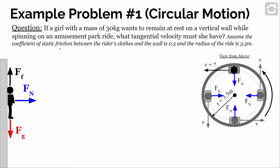The first example problem will figure out how big the needed tangential velocity is so the rider can stick to the wall when the floor is dropped. The question reads: if a girl with a mass of 30 kilograms wants to remain at rest on a vertical wall while spinning on an amusement park ride, what tangential velocity must she have? Assume the coefficient of static friction between the rider's clothes and the wall is 0.5 and the radius of the ride is 3.5 meters.